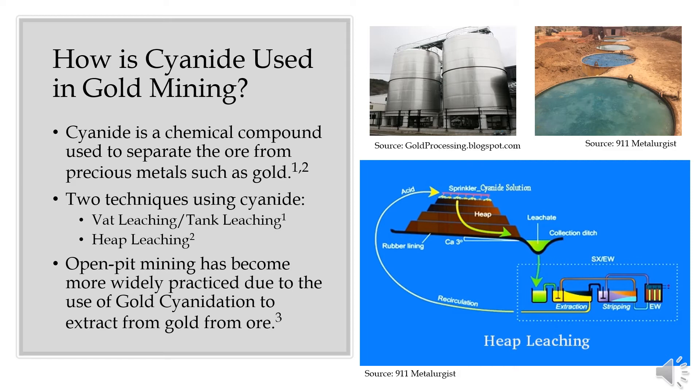After blasting the rock apart in a mine, the ore is transferred to a mill, where the rock is crushed, separated, and then crushed again until it is the size of beach sand. The ore is then transferred into large vats, where it is mixed with water and sodium cyanide solution for 24 hours. The cyanide bonds to the gold ions, making them soluble in water and able to be separated from the ore.